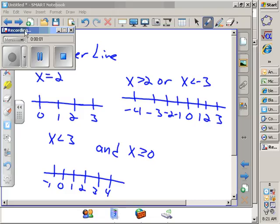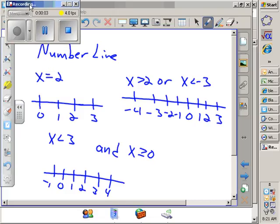Okay, so here we go. How do I graph these on a number line? First one, x equals 2. Right, there's my answer. x equals 2 on a number line. Very, very easy.